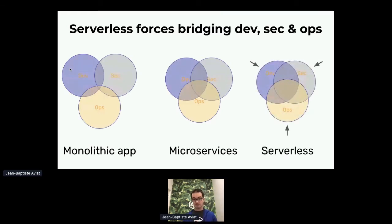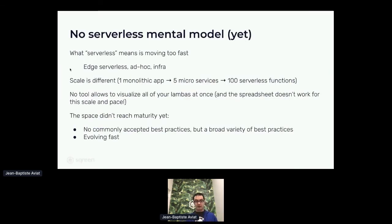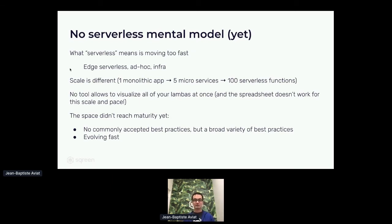But if we move to serverless, this intersection is even more important, because developers start to do more and more ops. A lot of concerns that were only in the territory of ops is now partly moving to the territory of dev, because they need those tools to orchestrate their lambda functions. Also, we don't have a serverless mental model yet because what serverless means is moving too fast — new things appear in the serverless world day after day. For instance, in the past two months, three or four new providers announced serverless at the edge.